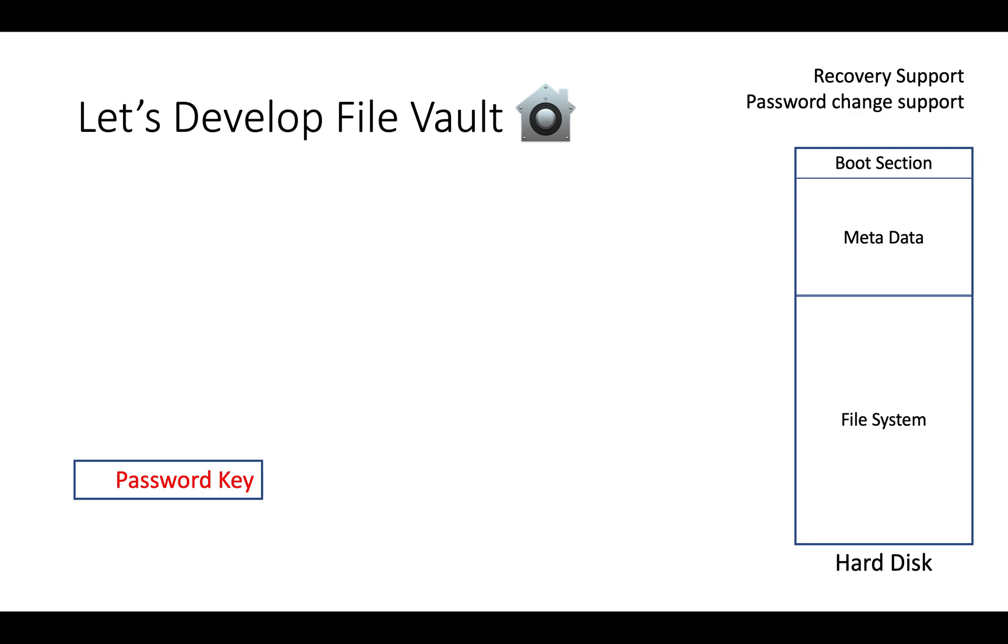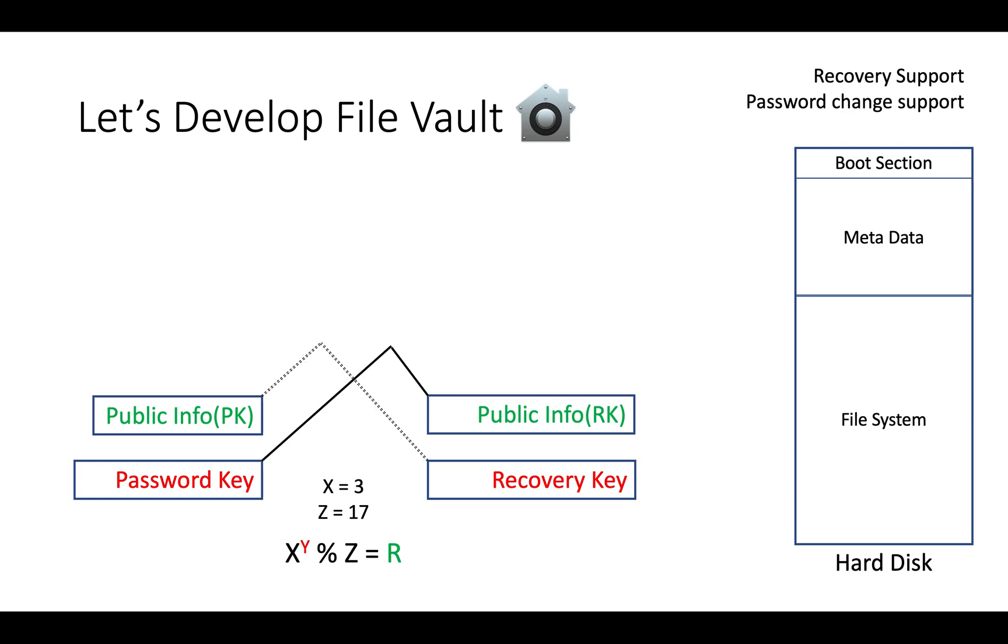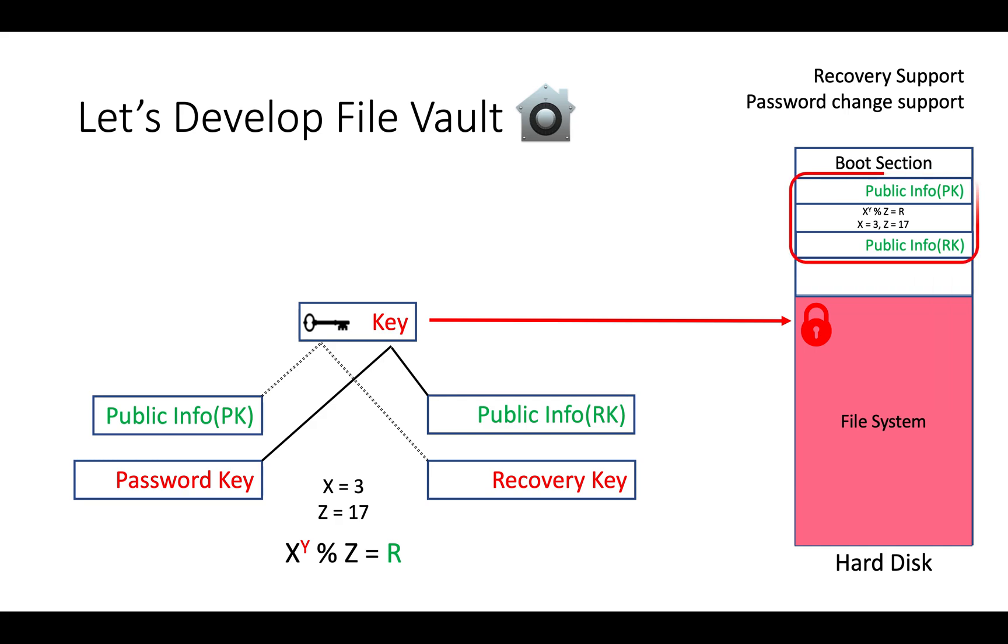Let's generate password key, a random number. Generate recovery key, another random number. Bring Diffie-Hellman formula. Define constant values. Using this formula generate public information. Using cross combination generate a common key. Use this key to encrypt hard disk. Store public information and constant into metadata section. Now, what to do with password key, where to store? Let's take password from user. Encrypt password key with password. And store encrypted password key into metadata section. User password stored into user's brain. Recovery key stored into locker.